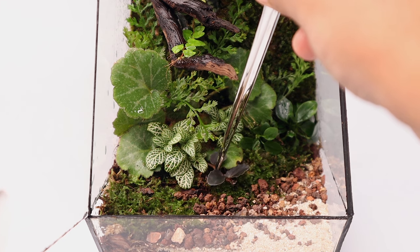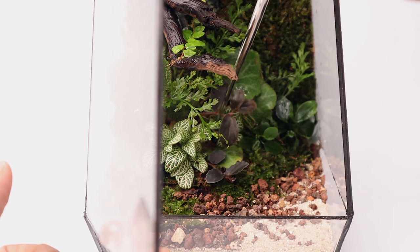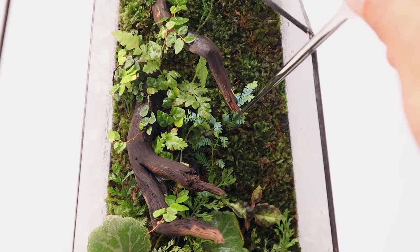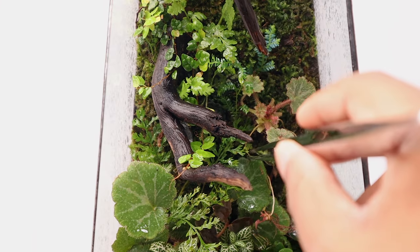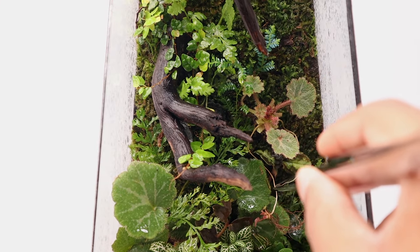I plant cuttings of pelionia weapons inside the foliage of the fittonia plants. Cuttings of selaginella are mounted on the wall to create more contrast. I also planted a small strawberry begonia on the moss wall.